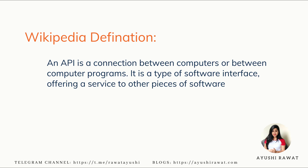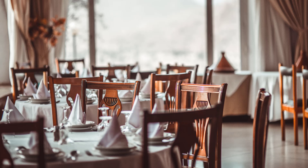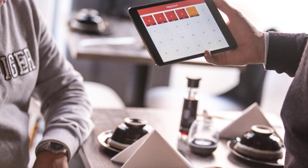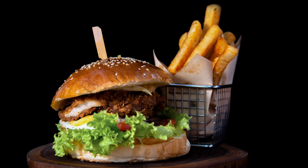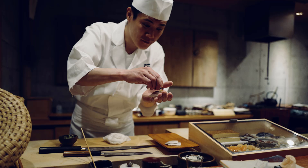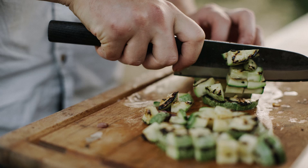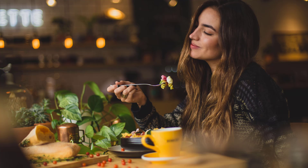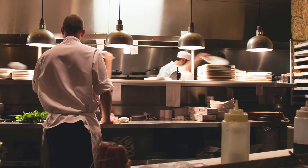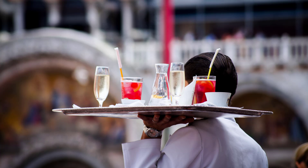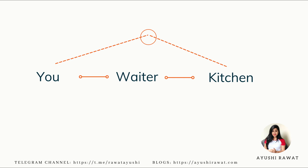Let's understand this with a very famous non-programming example. Say you visit a restaurant. The waiter presents you with a menu card. You decide what you want to eat — it could be pizza, pasta, or fries. The waiter takes down your order and shares it with the chef. Once your food is ready, he delivers the meal right to you. You do not have to worry about how the food will be prepared or anything that takes place inside the kitchen. Here, the waiter acts as an API — he is the link which establishes connectivity between you and the kitchen.